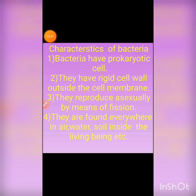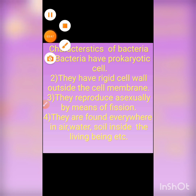Bacteria have a rigid cell wall outside the cell membrane. They reproduce asexually by means of fission. They are found everywhere — in air, water, soil, inside living organisms, etc. Bacteria are prokaryotic cells.